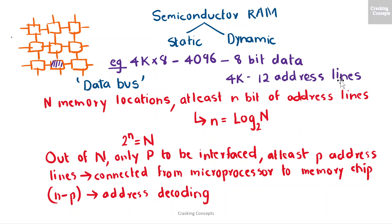In general, to address a memory location out of N memory locations, we'll require at least n bits of address or n address lines, where n is equal to log of N to the base 2. Thus if the microprocessor has n address lines, then it is able to address at most N locations of memory, where 2 raised to n equals N.